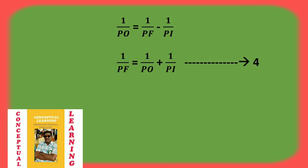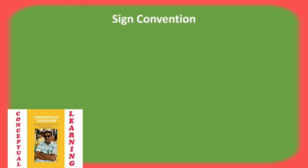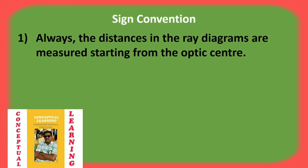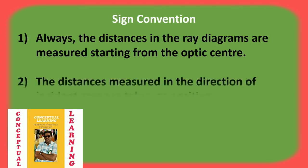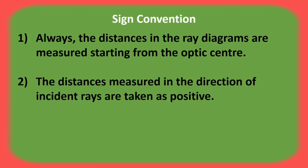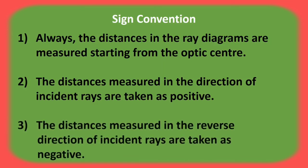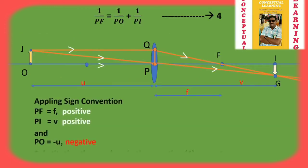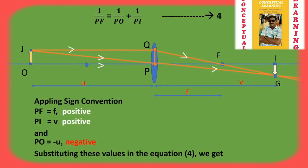Now we are going to apply the sign convention rules. The first rule is all distances are measured from the optic centre. The second rule is distances measured in the direction of the incident rays are taken as positive. When we apply the sign convention, PF equals focal length f, which is positive. The image distance PI is also in the same direction as the incident rays, so PI = V, also positive.